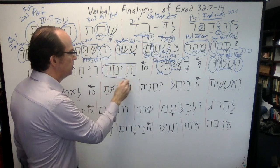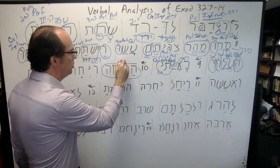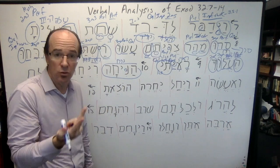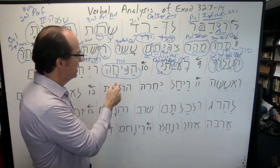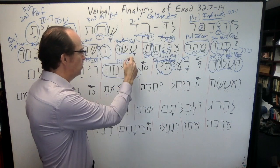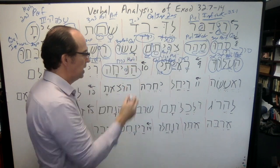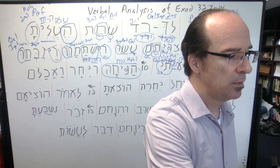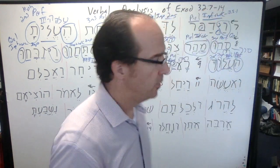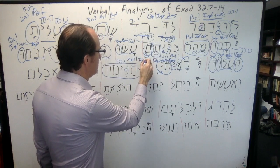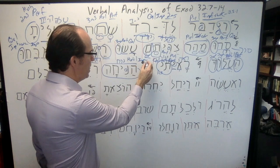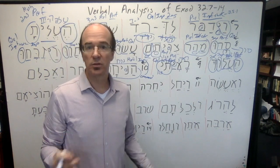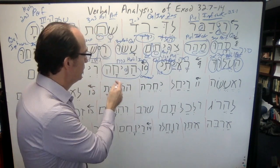This is from the verb nun-shin-het. It's a little hard because it looks like it could be a Nifal because of this doubling of the nun, but what this actually is is the Hiphal — this is an irregular Hiphal imperative. This is God speaking to Moses, so the imperative is going to be command: 'leave me alone, cause me to be alone.' The Hiphal is going to be causation.